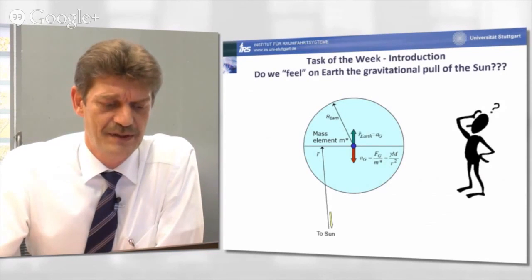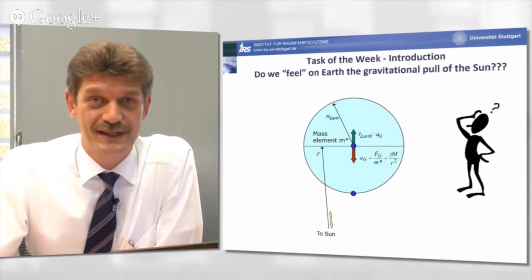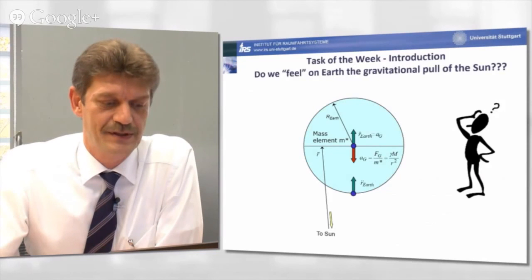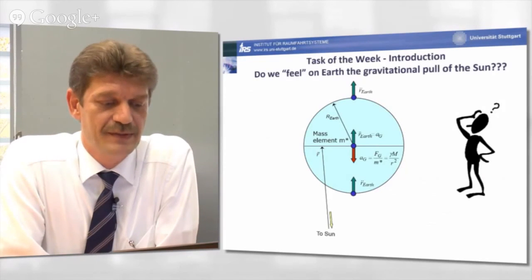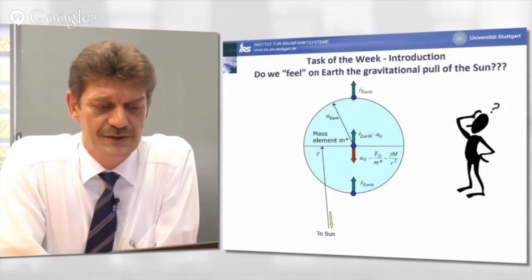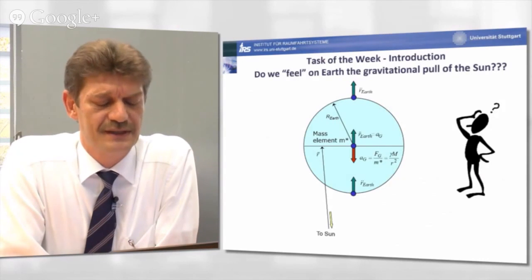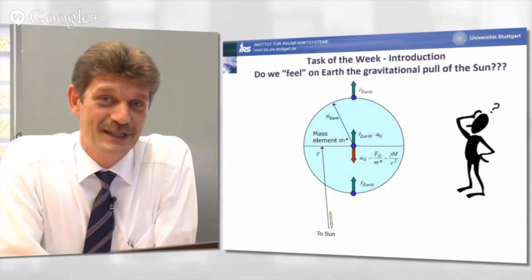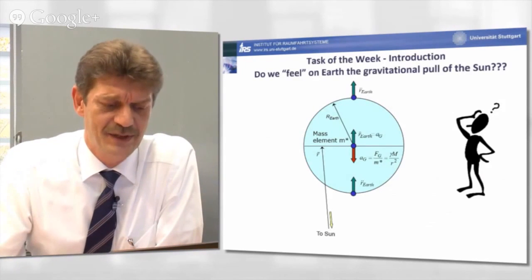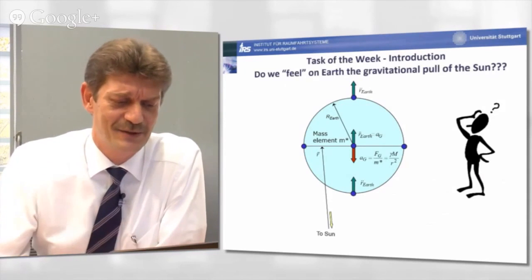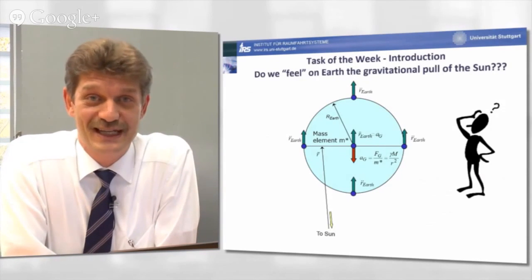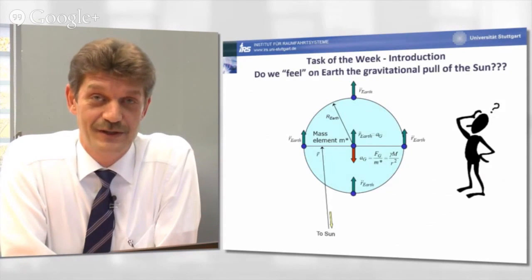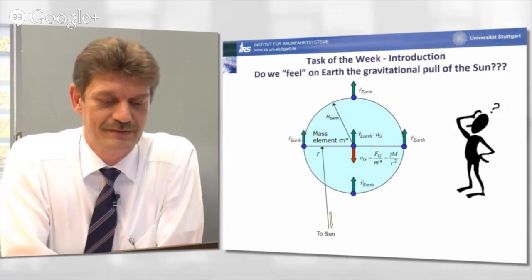Now, the question is, what happens with the mass element closer to the Sun on the Earth's surface? And what happens to a mass element which is farther away from the center of the Earth? And assuming that these mass elements are rigidly connected to the mass element in the center of the Earth, just think about this question, what the outcome would be. And also, maybe, what happens on the right-hand and the left-hand side of this scheme? Again, assuming that the free-fall acceleration is the same as in the center of the Earth, what happens with the gravitational pull from the Sun at these certain points?